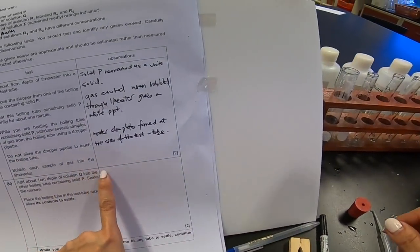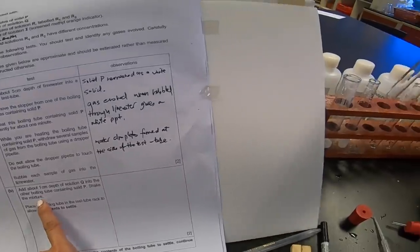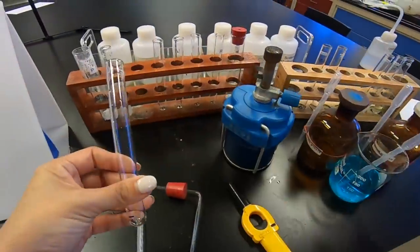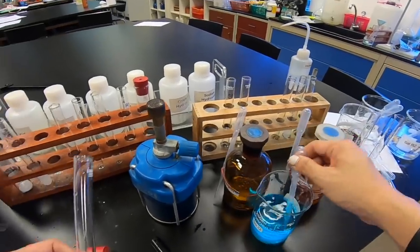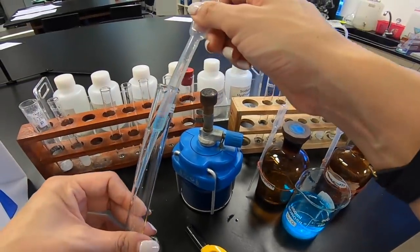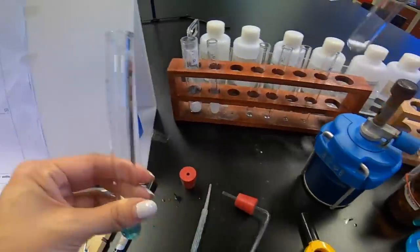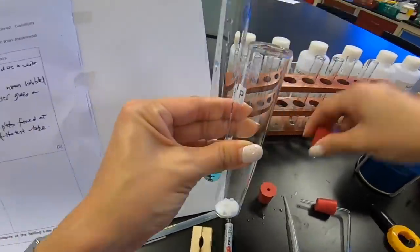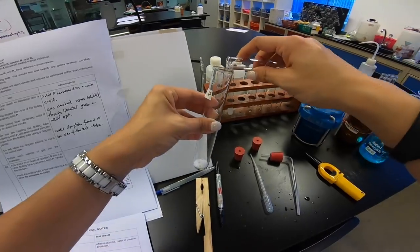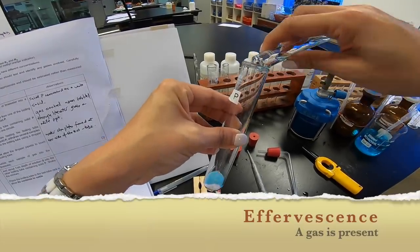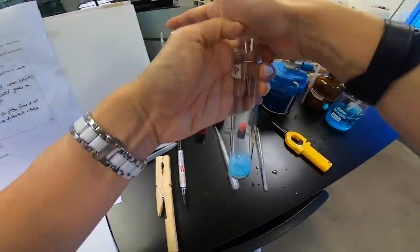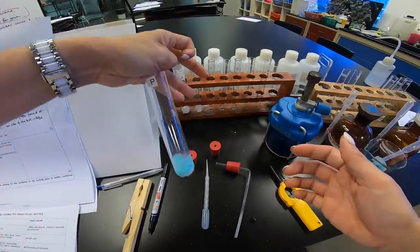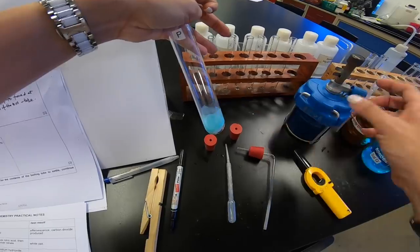Add about 1 cm depth of solution Q into the other boiling tube. So, I'm supposed to add 1 cm depth. So, this is my Q. 1 cm depth is about this amount. And this is my solid P. So, Q into P. Whoa. I actually see effervescent forming. Now, because there's effervescent, it goes to show that there is existence of a gas.